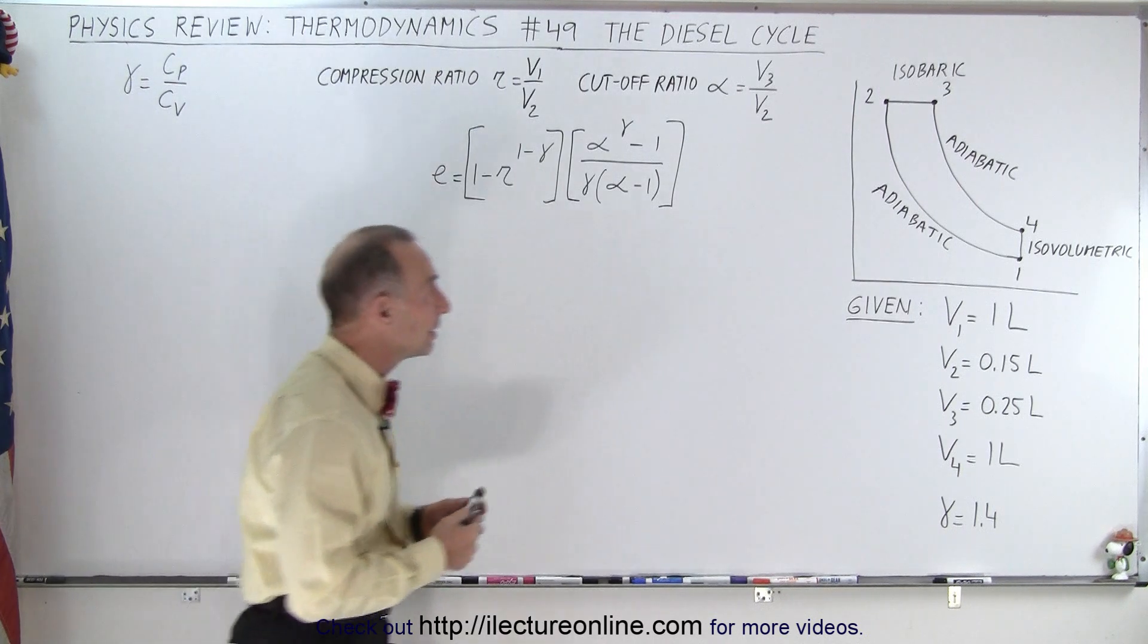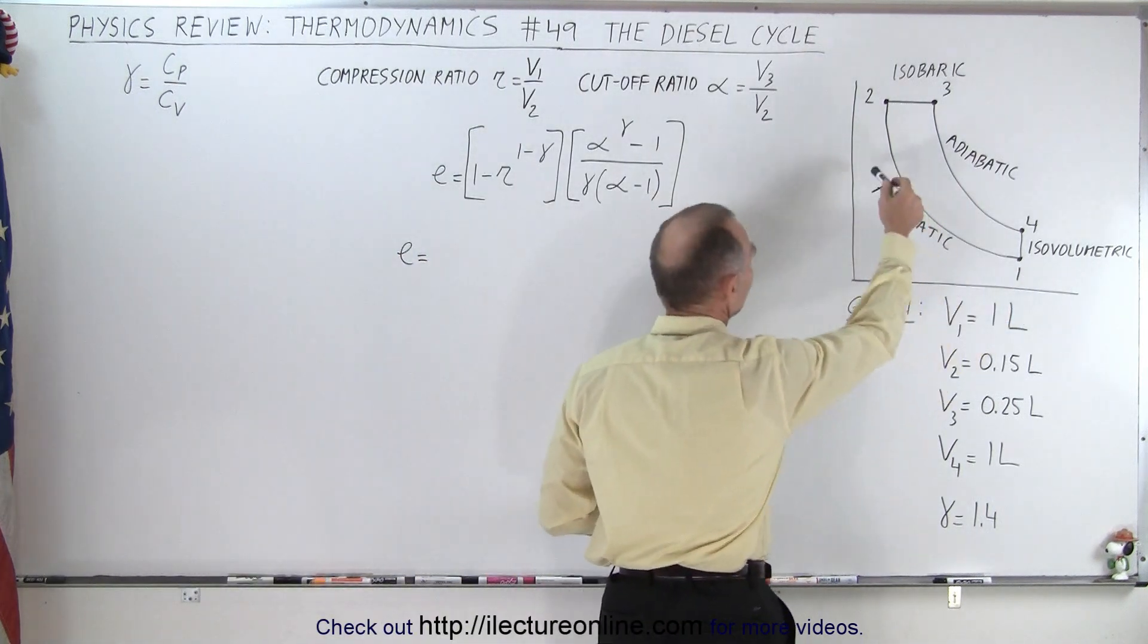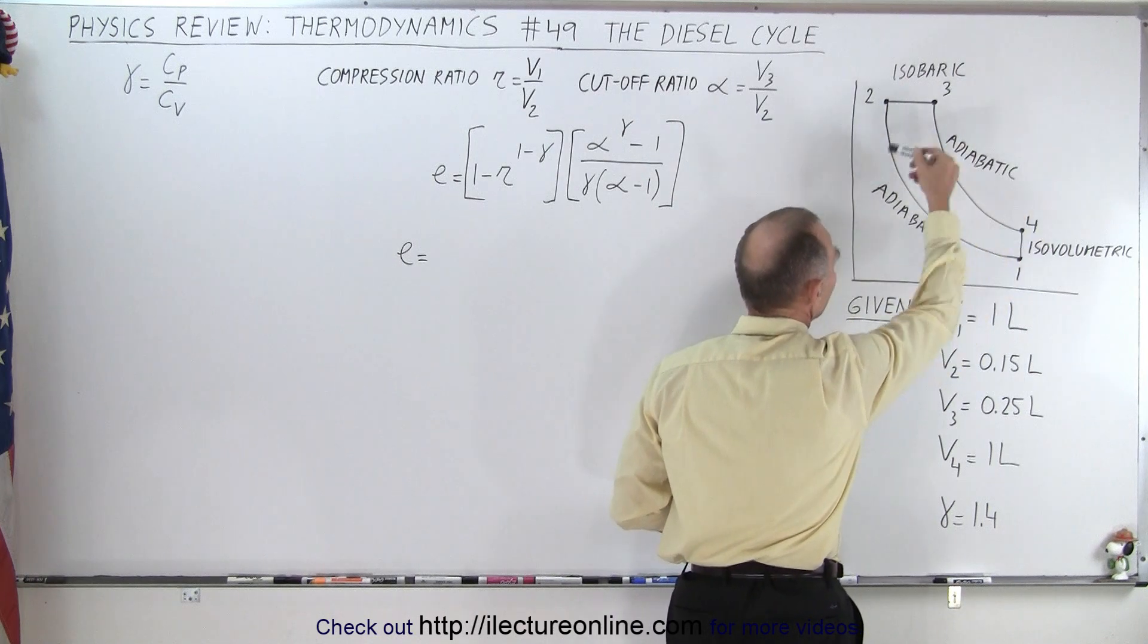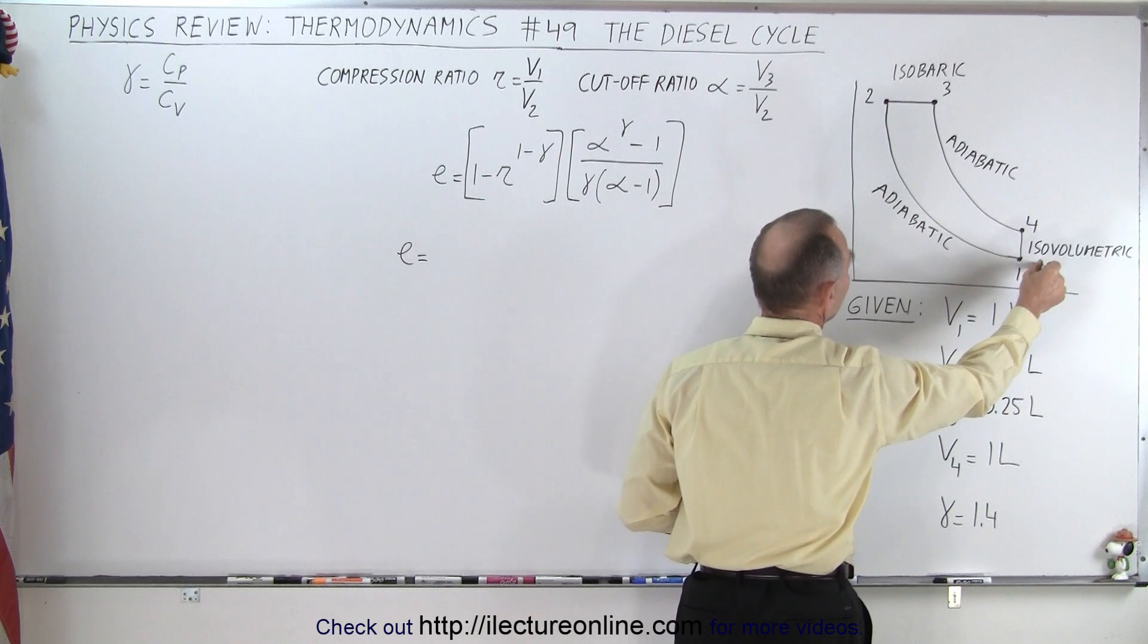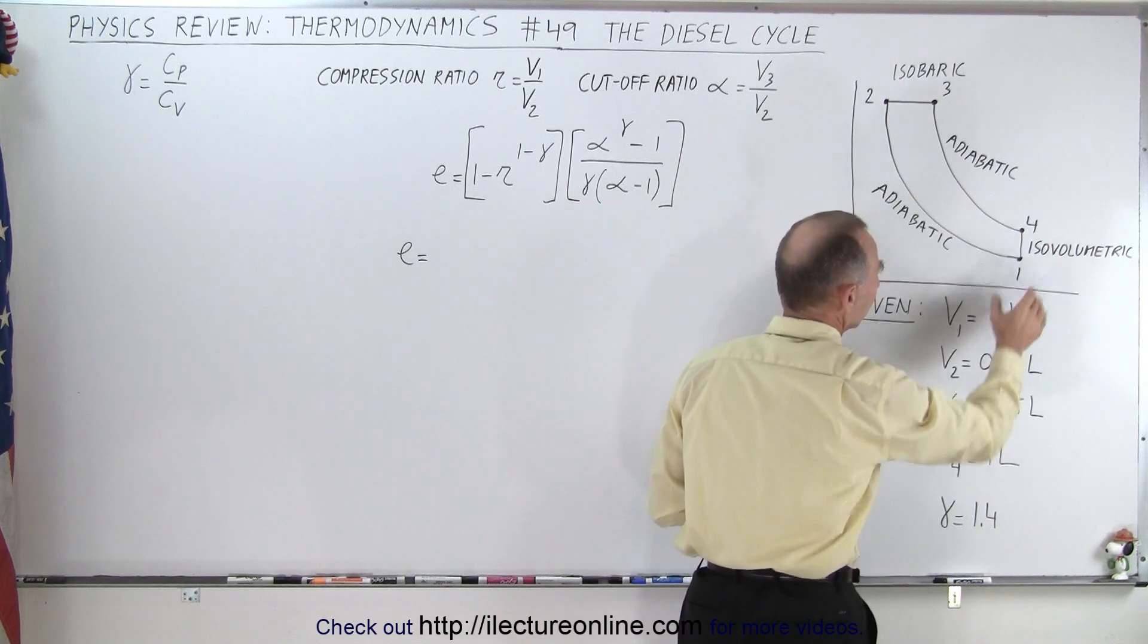And so the diesel cycle then looks like this. We still have two adiabatic processes, but on the top end here we have an isobaric process, and the bottom end here you have an isovolumetric process.